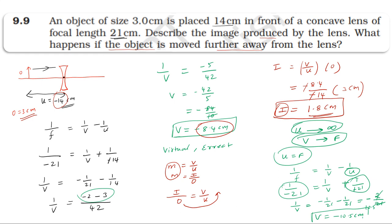So, if we look at object at focus placement, image forms at infinity. That applies to a convex lens and concave mirror. For a concave lens and convex mirror, when the object is at the focus, the image forms at infinity. So as the object distance increases, the image position changes accordingly.